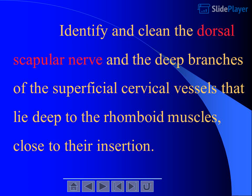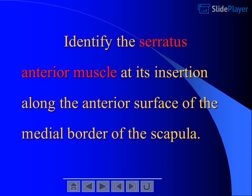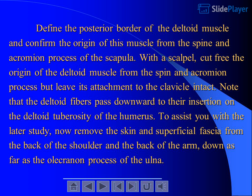Identify and clean the levator scapulae and rhomboid minor and rhomboid major muscles. Leave the levator scapulae intact and trace its fibers to their insertion on the medial border of the scapula. Cut free the origins of the rhomboid minor and major muscles from the vertebrae and carefully reflect them laterally to their insertions on the medial border of the scapula. Be careful to preserve the underlying serratus posterior superior muscle, which is sometimes stuck to the rhomboid muscles. Identify and clean the dorsal scapular nerve and the deep branches of the superficial cervical vessels that lie deep to the rhomboid muscles, close to their insertion. Identify the serratus anterior muscle at its insertion along the anterior surface of the medial border of the scapula. Define the posterior border of the deltoid muscle and confirm the origin of this muscle from the spine and acromion process of the scapula. With a scalpel, cut free the origin of the deltoid muscle from the spine and acromion process but leave its attachment to the clavicle intact. Note that the deltoid fibers pass downward to their insertion on the deltoid tuberosity of the humerus. To assist you with a later study, now remove the skin and superficial fascia from the back of the shoulder and the back of the arm, down as far as the olecranon process of the ulna.